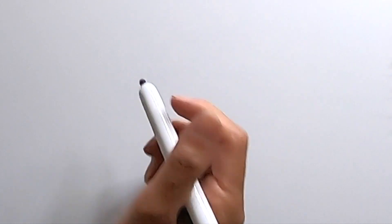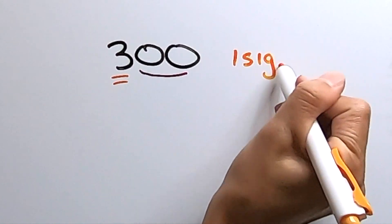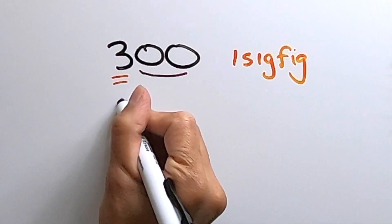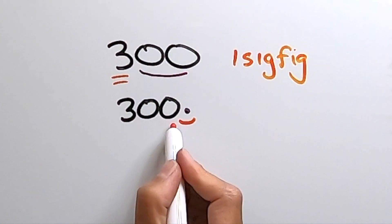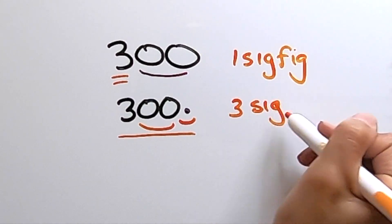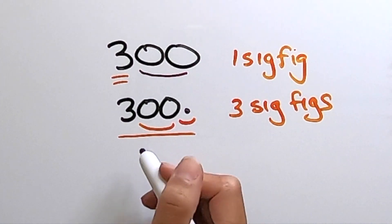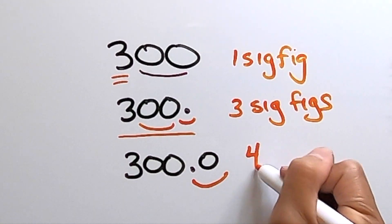I want to bring up the decimal rule, which tends to be confusing. Let's start with 300. The two zeros have to be written, so they are not considered significant figures. The only significant figure is the 3, so this number has one significant figure. But if they wrote 300 with a decimal point after it, they bothered to write that decimal point, which means they are considering those two zeros significant — so now the number has three significant figures. Likewise, if they wrote 300.0, they bothered to write a decimal point and a zero after it, so now the number has four significant figures.